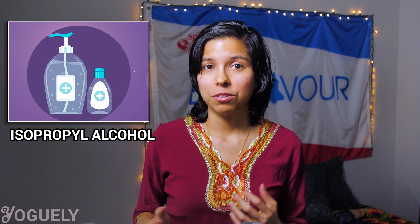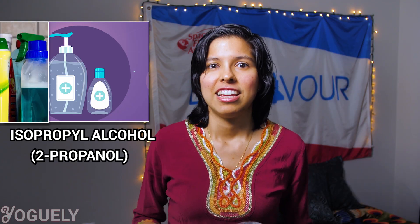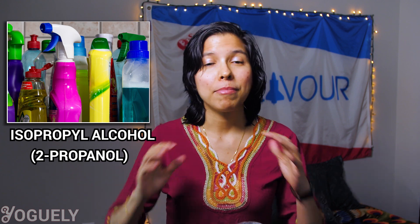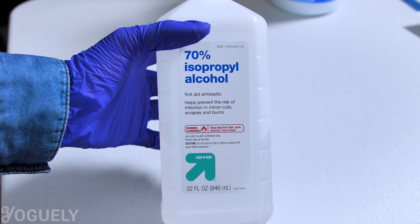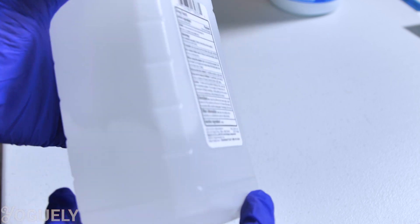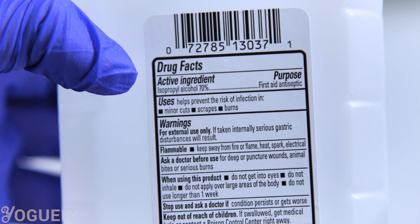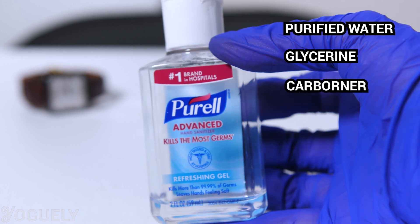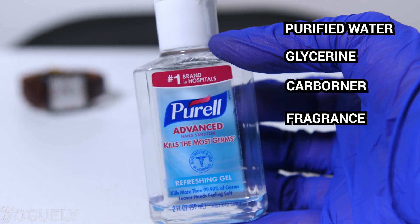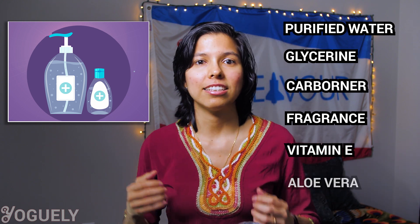Isopropyl alcohol, also known as 2-propanol, is a staple cleaning agent. It is the active ingredient in many household cleaners. It comes diluted with purified water or in sanitizer solutions, typically to a concentration of 70% to 99%. Sanitizers are commonly made with purified water, glycerine, carbomer thickening agent, and fragrance. Some hand sanitizers also have added vitamin E and aloe vera.